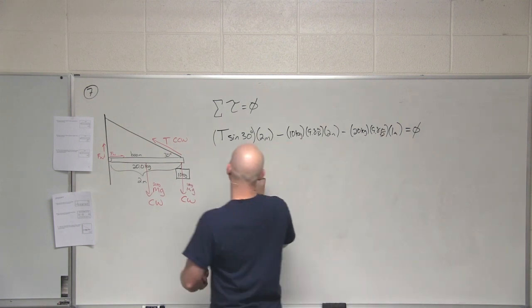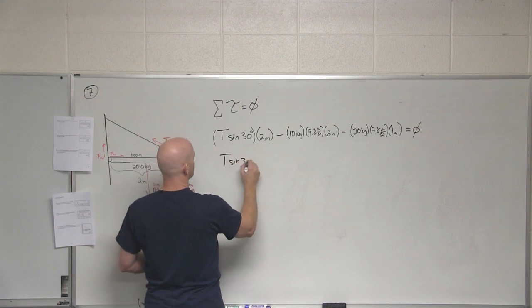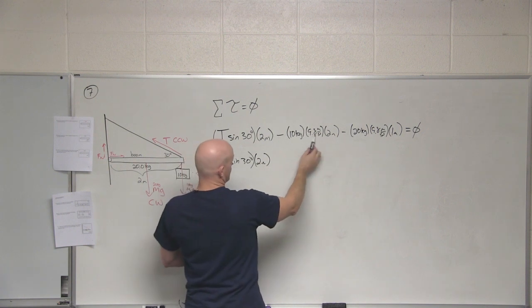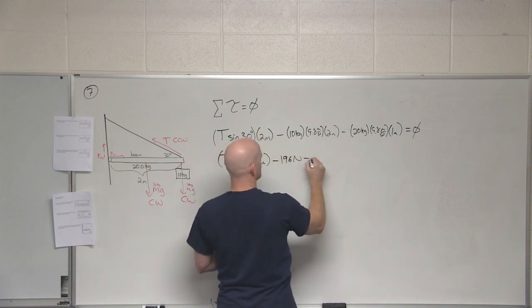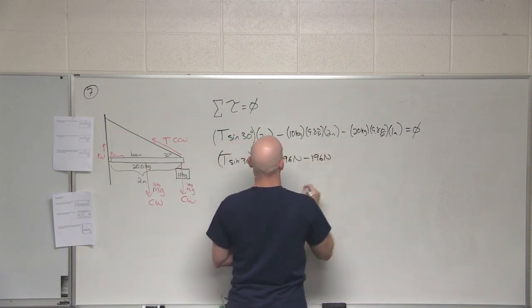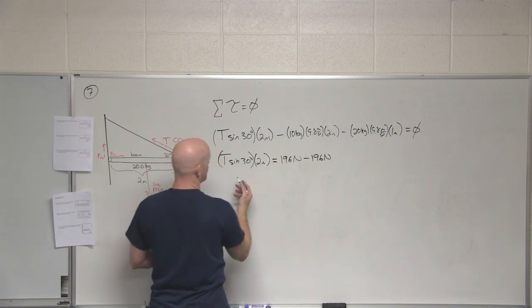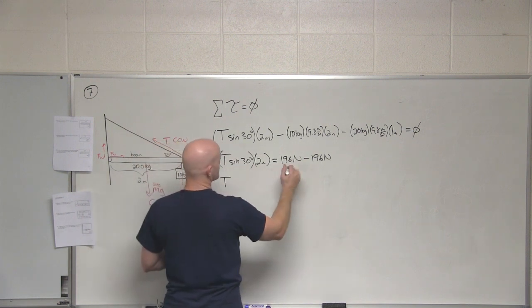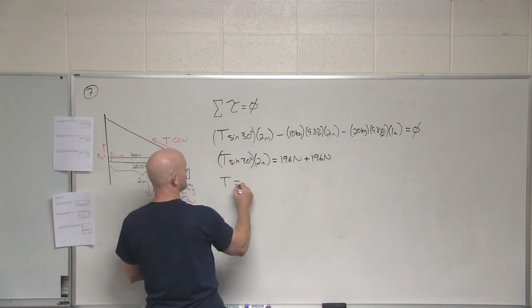Anything else? No, because these guys act at the hinge, so they've got lever arms of zero. Great, so all these add up to zero. And again, I could have just said that the counterclockwise ones equal the clockwise ones. Same difference. So I usually skip this step and go straight there anyways. T sine 30 degrees times two meters. 10 times 9.8 is 98, times two is 196. 196 as well.